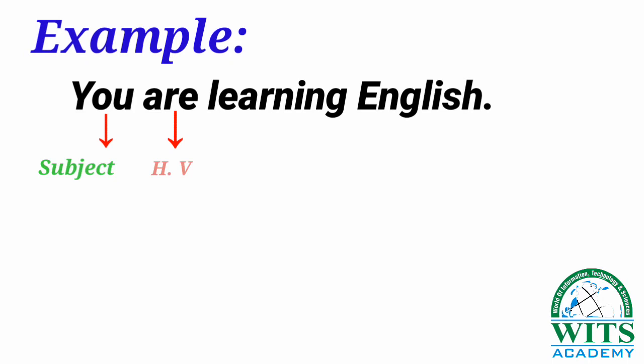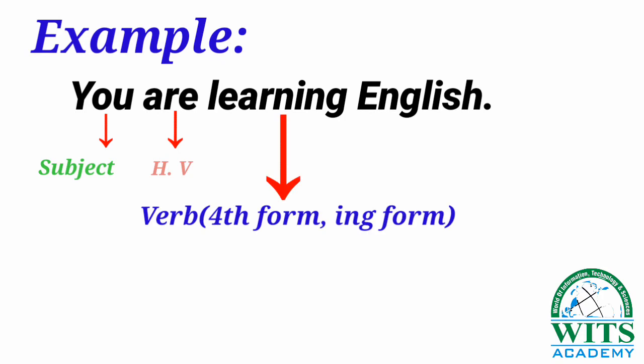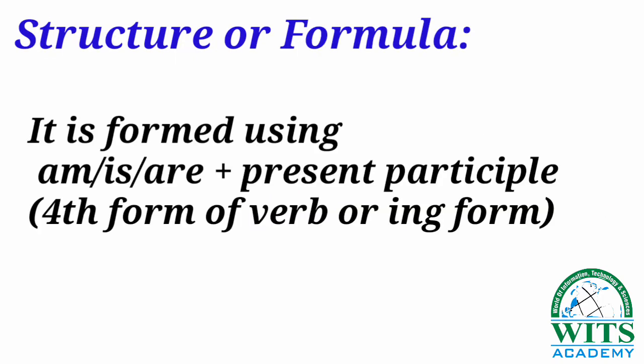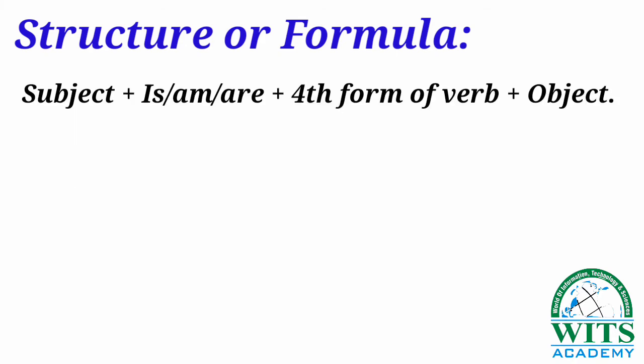After the subject we use a helping verb, then the verb in its -ing form — that is the fourth form of the verb — and after that we use the object. If you noticed the sentence, we used a structure to make this tense. So let's learn what the structure is. It is formed using am/is/are plus the present participle, meaning the fourth form or -ing form of the verb.